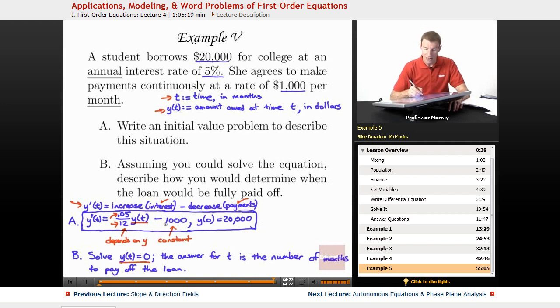So we just subtract $1,000 from y prime there. So that gave us the differential equation. The initial condition reflects how much she owes initially, which was $20,000. So we got our initial value problem. That would be a linear differential equation. So we could solve it using our techniques. But the question just asked how we would figure out when the loan would be paid off.